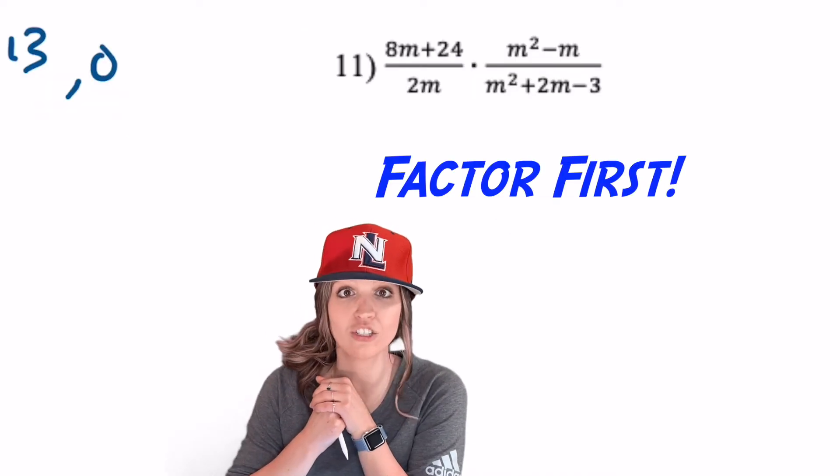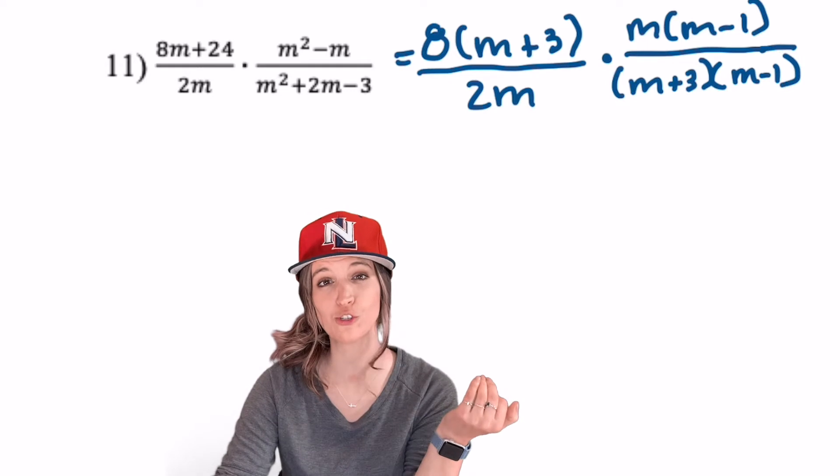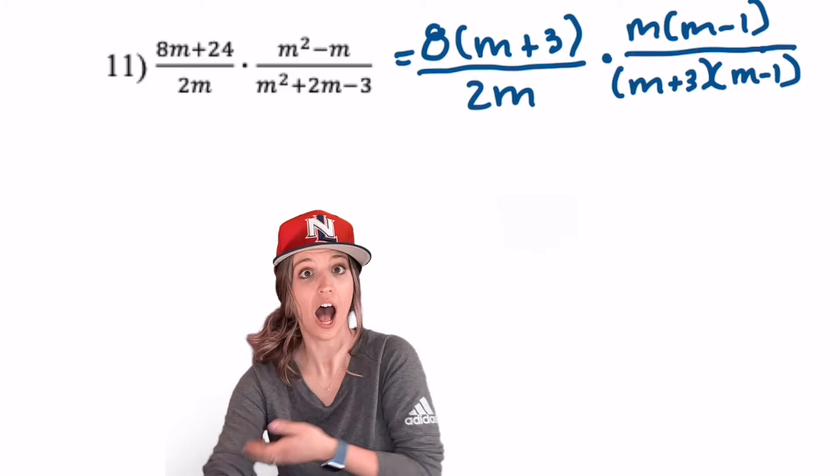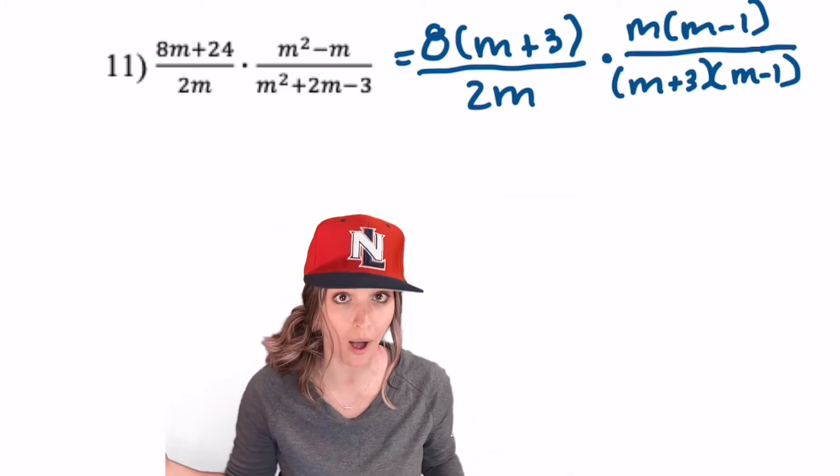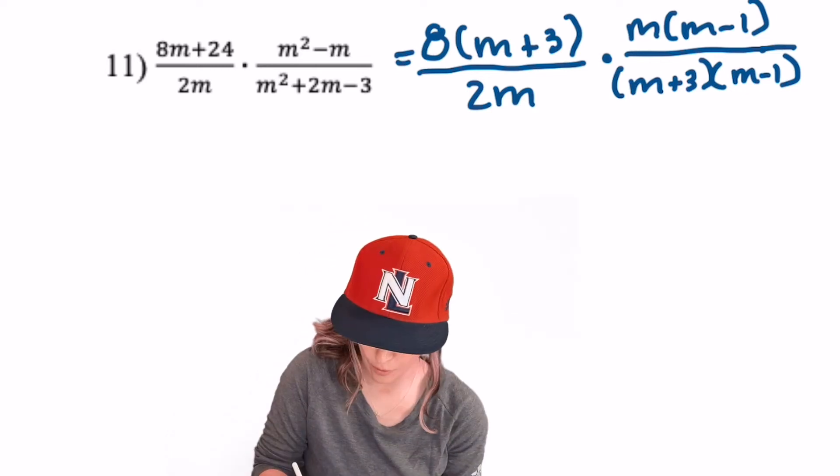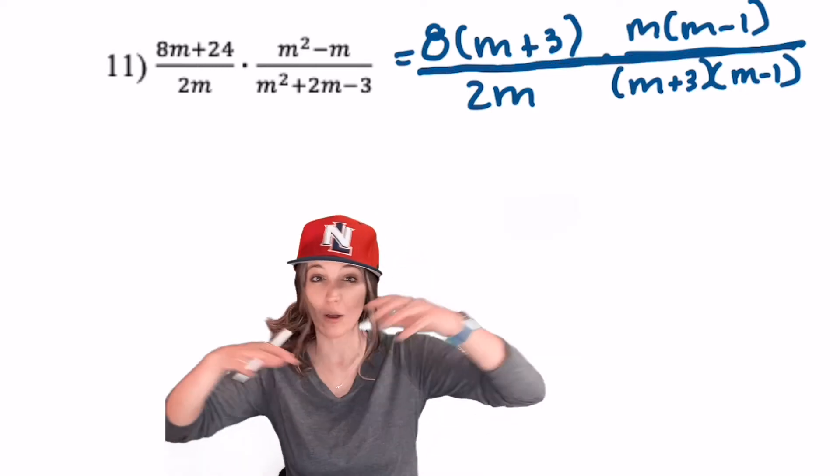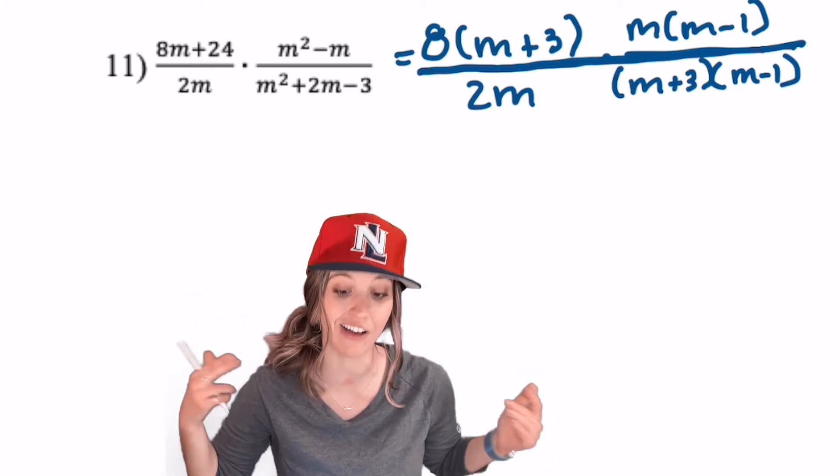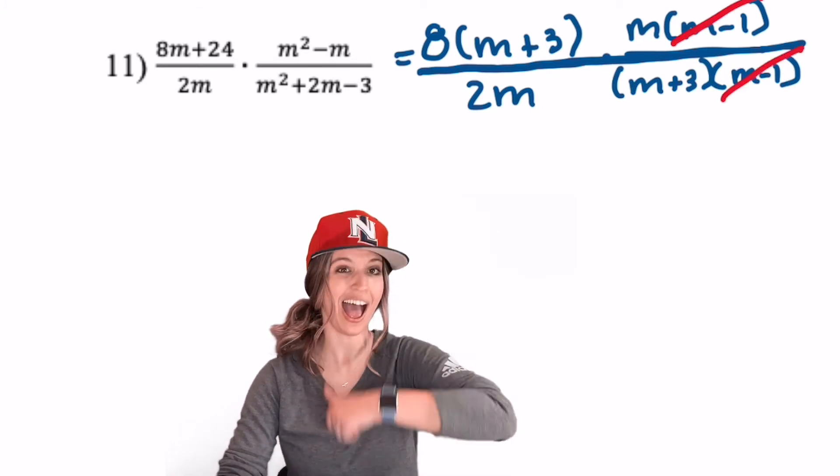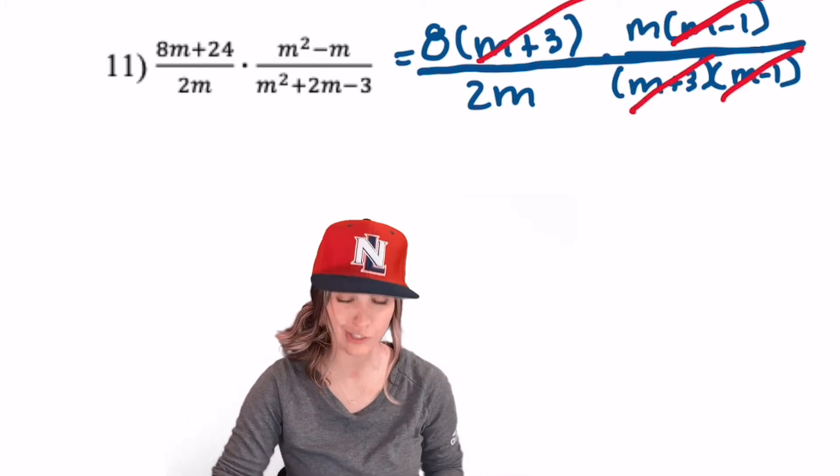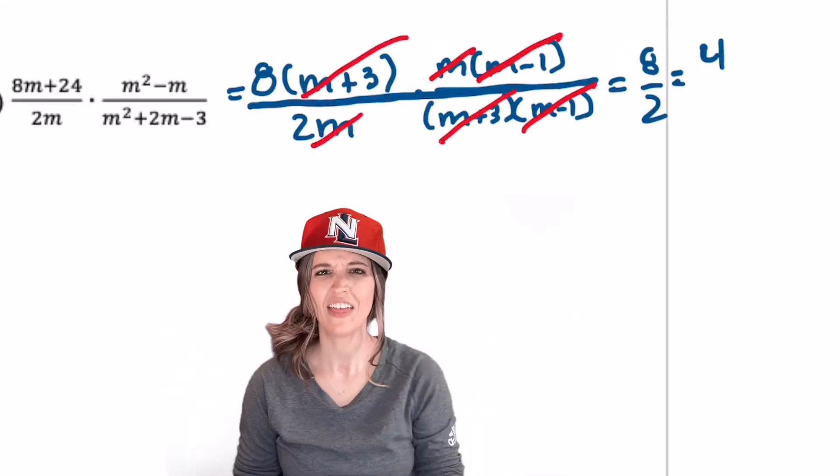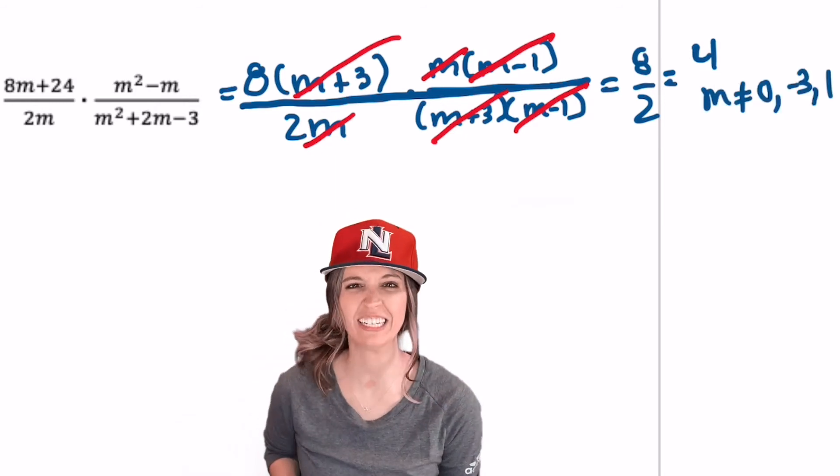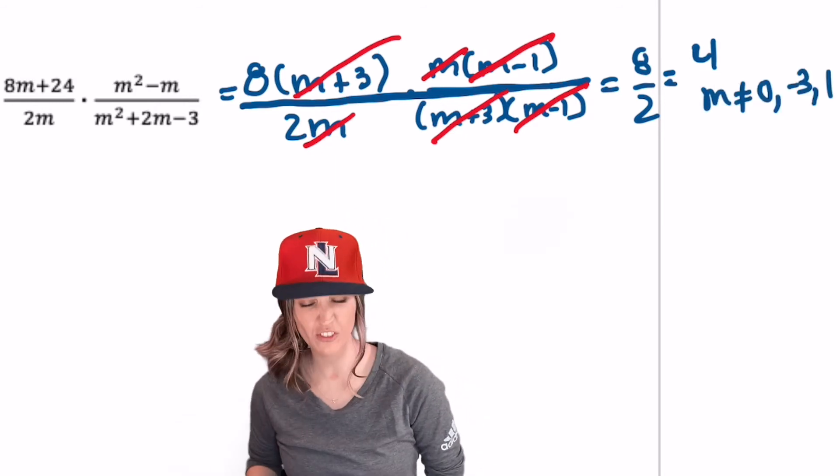Number 11, let's factor first. Check out the factoring here. I had to use GCF on both numerators. In the first rational expression, I pulled out an 8. And in the second, I pulled out an m, leaving me with m times n minus 1. Now what? What can I divide out? Remember, two rational expressions being multiplied together is just like one big fraction. So anything in common with the numerator and denominator, I can divide out. So m minus 1 and m minus 1, out of here. m plus 3, m plus 3, out of here. Anything else? M! That just leaves me with 8 divided by 2, which is 4. Go state your restrictions. Did you get all of them? I had to exclude m equals 0, negative 3, and 1.